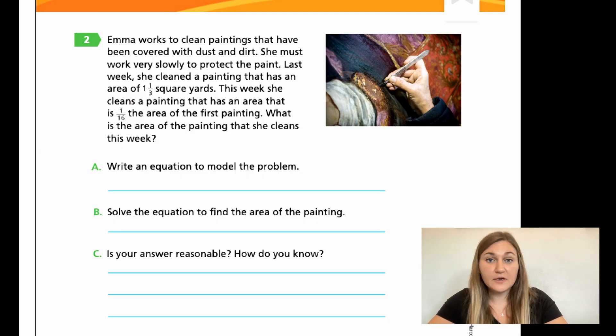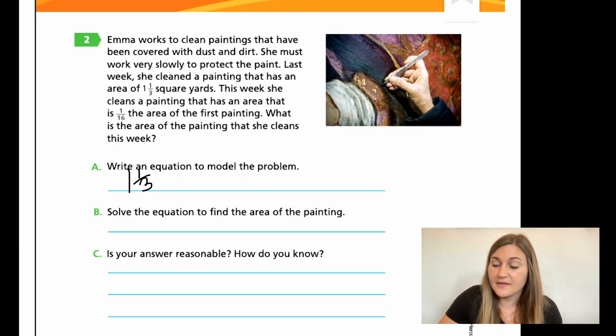Great work. Let's go ahead and go over these. So for A, I'm just writing the equation. So if I have 1 1/3, and I know I need to find 1/16th of that, I'm going to multiply it by that 1/16th. And then I'm actually going to solve below. So I need to turn my 1 1/3 into an improper fraction so that I can multiply. So 3 times 1 is 3, plus 1 is 4.